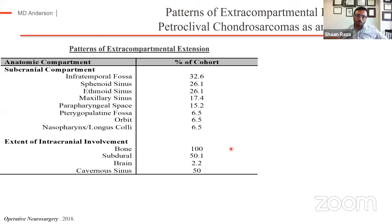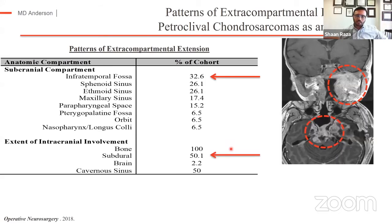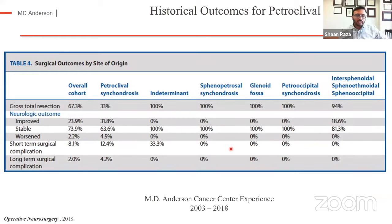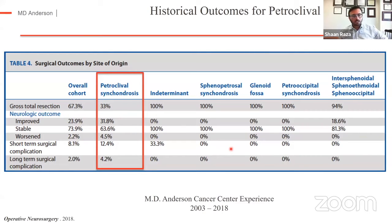When we looked at our petroclival chondrosarcomas, a third of patients have disease extension to the infratemporal fossa. Despite their extradural origin, half have disease extension to the subdural space, and half have disease extension to the cavernous sinus. Whatever surgical strategy you pick, each of these compartments has to be accessed to perform a meaningful resection. Looking at our outcomes for chondrosarcomas at all skull-base sites, those arising at the petroclival synchondrosis have traditionally had the poorest outcomes with regards to extent of resection, neurologic function, and surgical complications — with anterior petrosal, posterior transpetrosal, or combined petrosal approaches. Clearly, this is an area where there has been need for improvement.